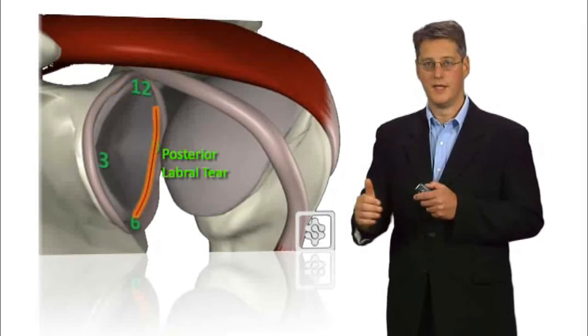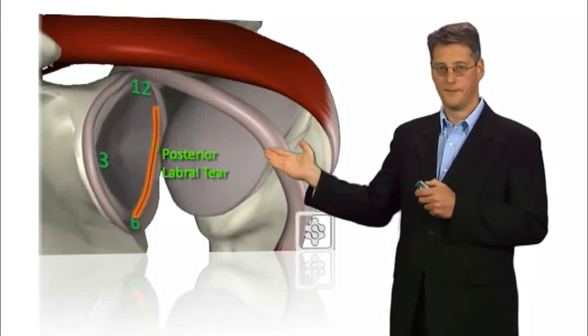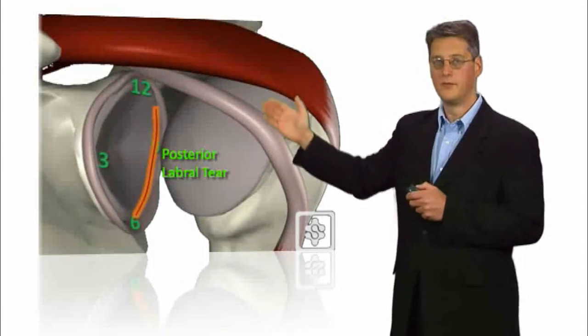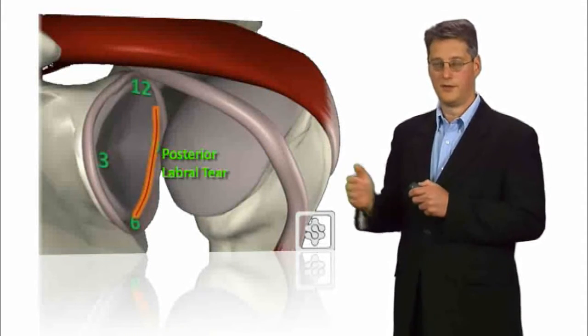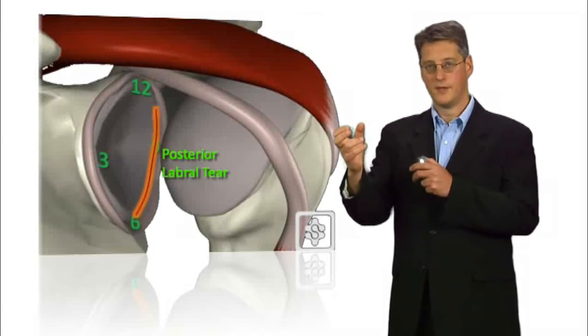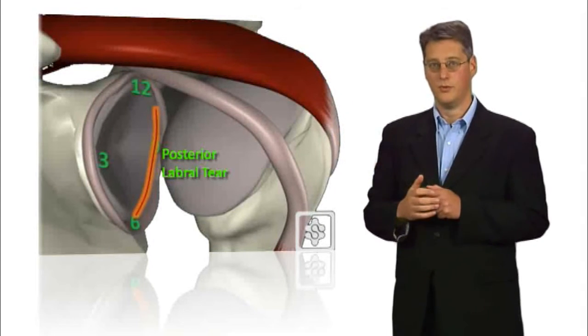You can also get tears at the back of the shoulder and these are known as posterior labral tears running from about 12 o'clock to 9 o'clock. These occur with a dislocation or subluxation backwards of the shoulder joint.